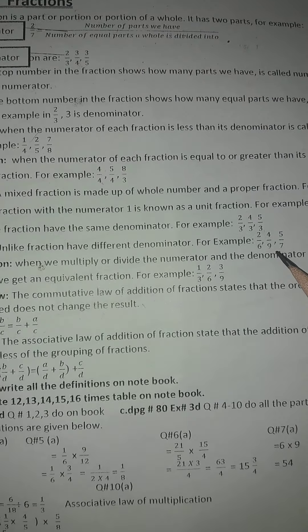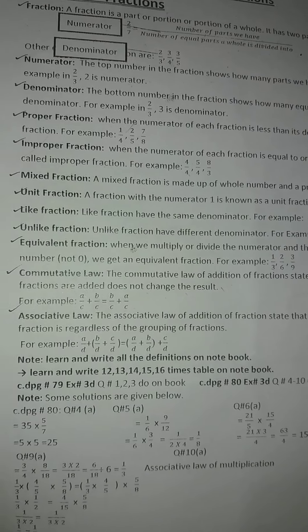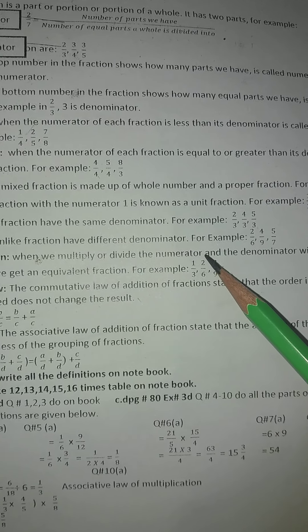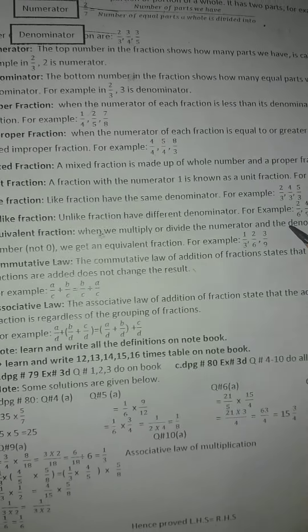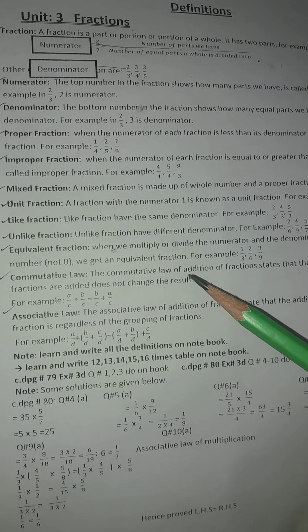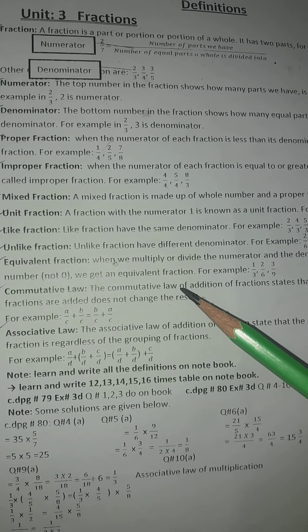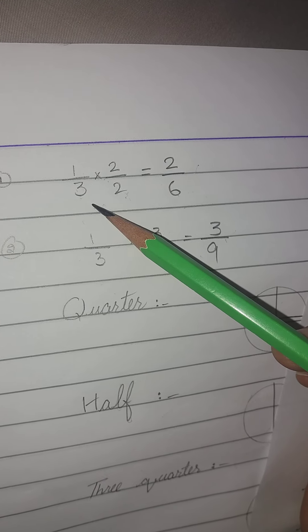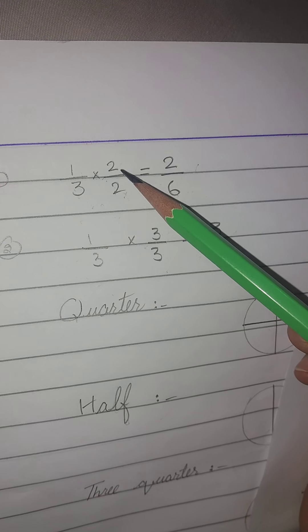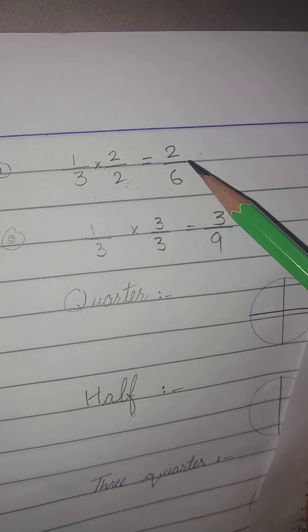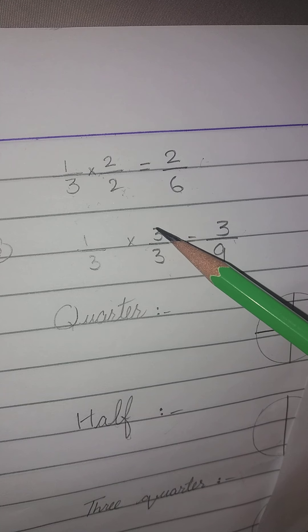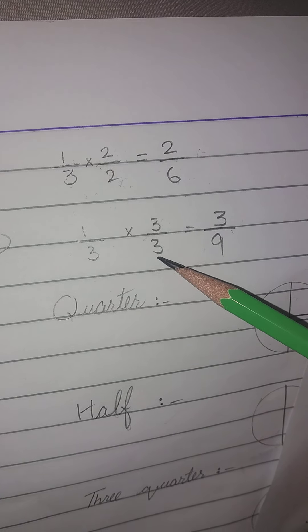Equivalent fractions: when we multiply or divide both the numerator and the denominator by the same number (not zero), we get an equivalent fraction. For example, one over three, two over six, three over nine. One over three multiplied by two over two gives two over six, and one over three multiplied by three over three gives three over nine. These are called equivalent fractions.